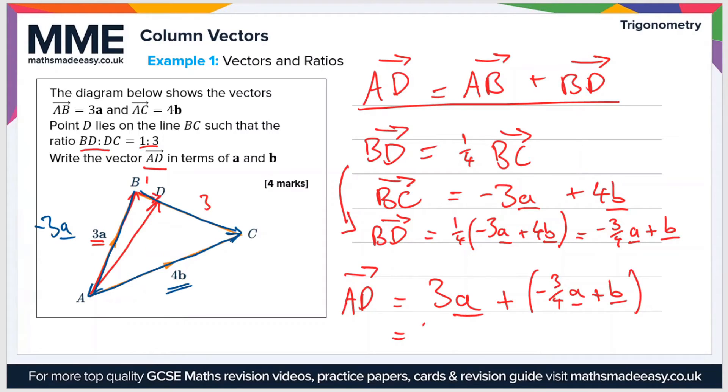And you can write 2 and a quarter as an improper fraction if you like, a top heavy fraction. So 2 and a quarter is 9 over 4a plus b.